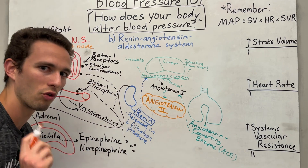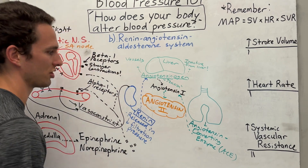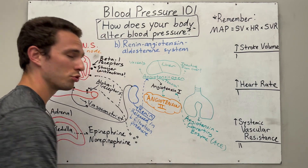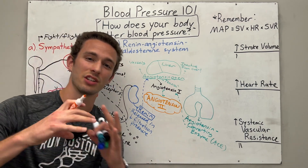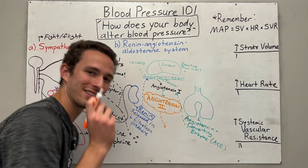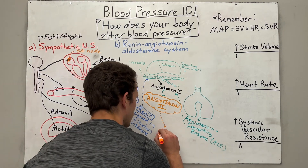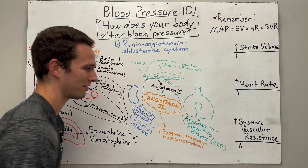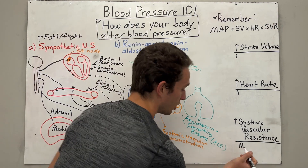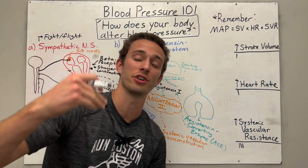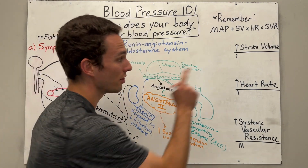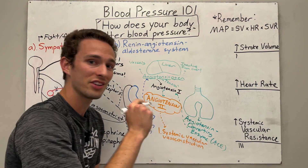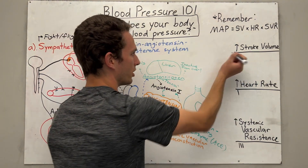Angiotensin-2 does a variety of things to help increase blood pressure. First, it goes to a variety of different blood vessels and constricts them — systemic vascular vasoconstriction — increasing systemic vascular resistance. More blood will also return to the heart at a rapid rate, thus increasing preload, thus increasing stroke volume.